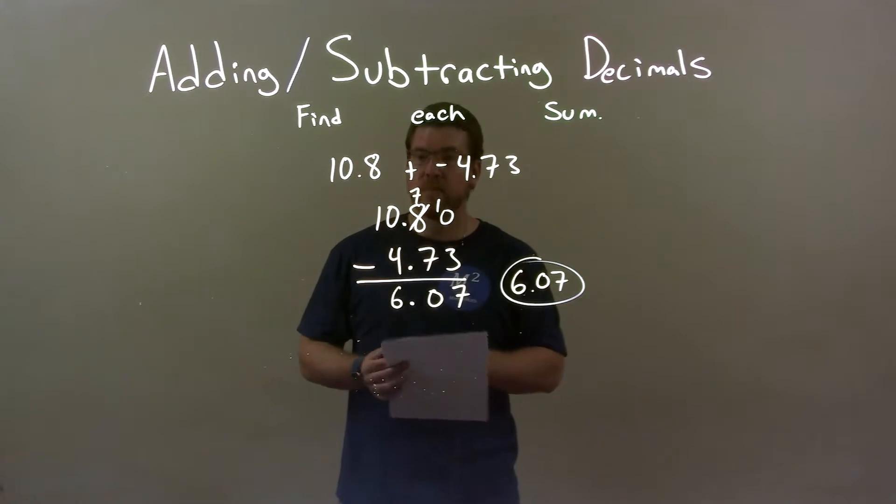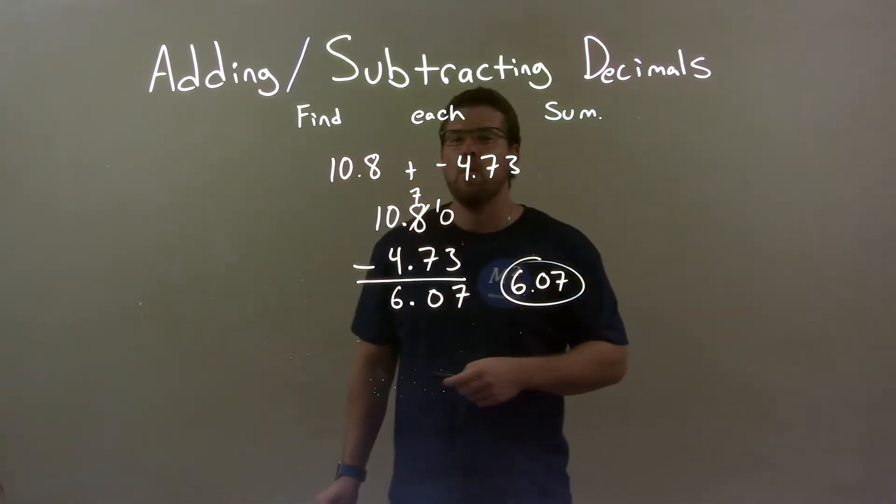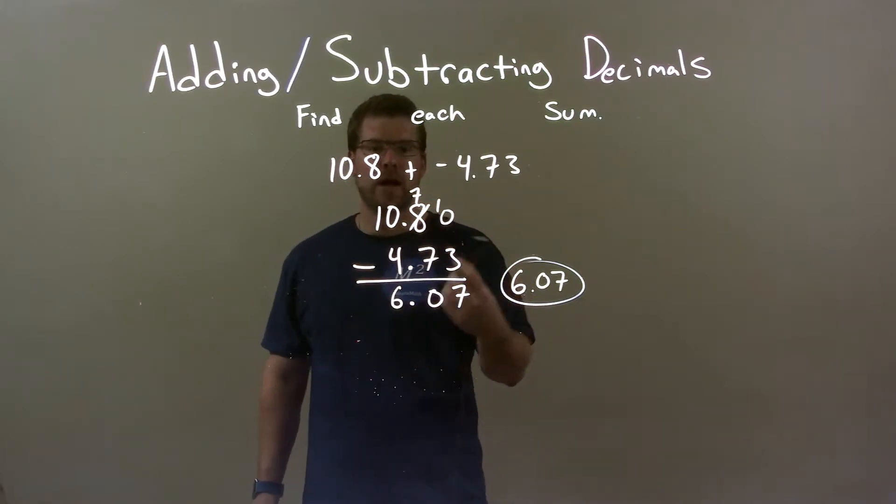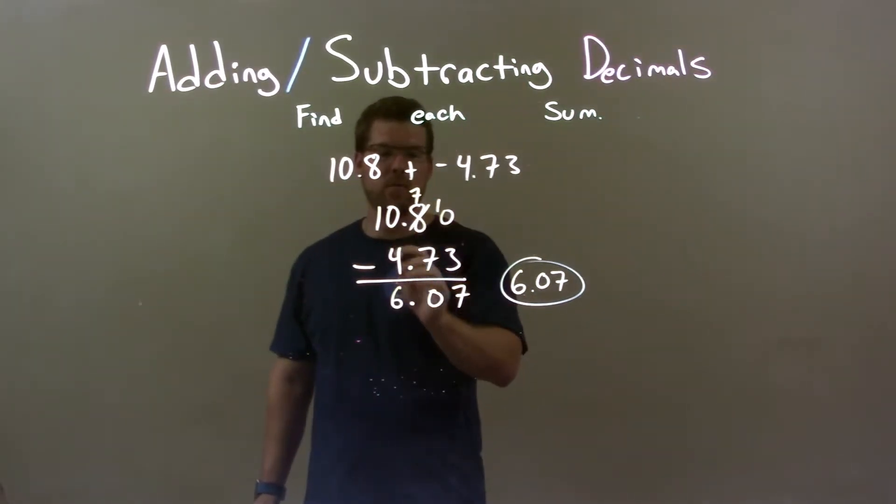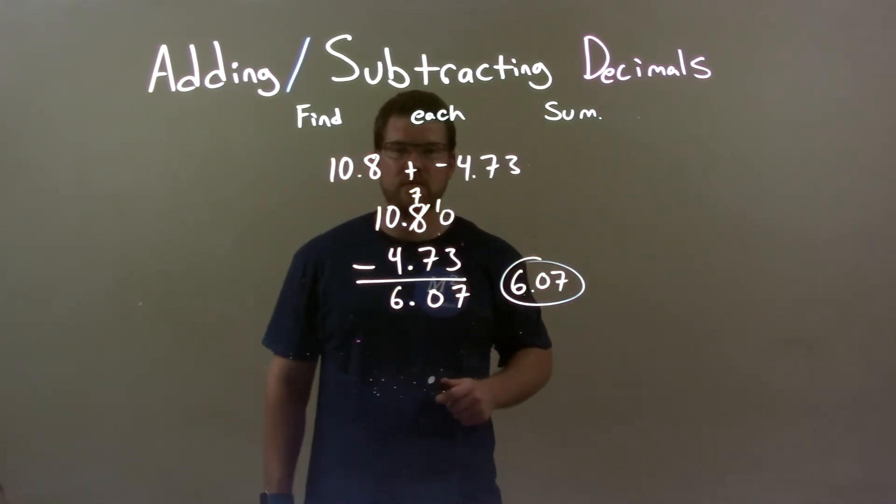So, quick recap. We're given 10.8 plus negative 4.73. Well, I know that adding a negative is the same thing as subtraction. So we have 10.8 minus 4.73. Then I followed my rules. I carried that 1 over here to 10. Put that 8 to be a 7. And I ended up with 6.07. So my final answer here is just 6.07.